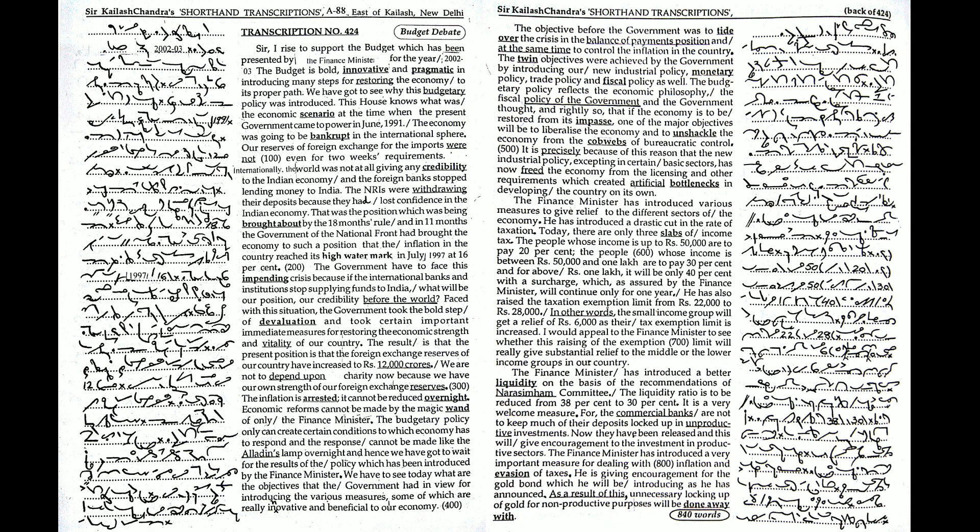Today, there are only three slabs of income tax. The people whose income is up to Rs. 50,000 are to pay 20%. The people whose income is between Rs. 50,000 and 1 lakh are to pay 30% and for above Rs. 1 lakh it will be only 40% with a surcharge which, as assured by the finance minister, will continue only for one year.